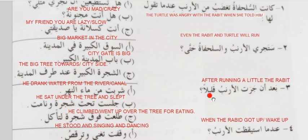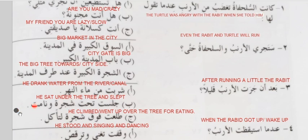Ba'dan jarat al-arnab qalilan — after the rabbit ran a little. Ba'd means after. Jarat means running, he ran. Qalilan means little bit or after some time. Sharbatu min al-ma nehr — he drank water from the river or canal. Nehr means river or canal. Jalasat taht shajra wa namat — he sat under the tree and slept. Nam means sleep, taht means under, jalas means sit. Wa talat fawq shajra litakul — he climbed or went up over the tree for eating. Litakul means for eating.